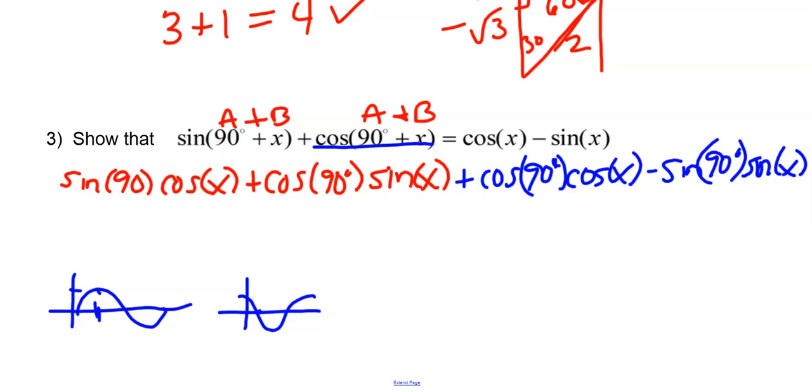So I'm going to evaluate. Sine of 90 is 1 times cosine x, plus cosine of 90 is 0, times sine of x, plus cosine of 90 is 0, times cosine of x, minus sine of 90, 1, times sine of x.